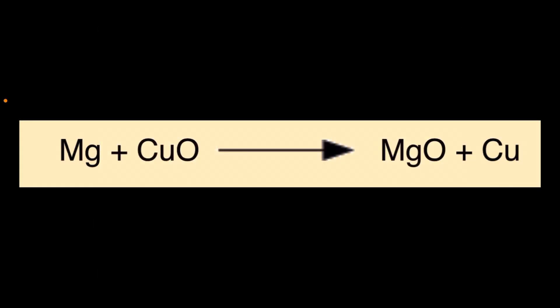So what's going on in this exothermic redox reaction is we started with reactants, magnesium, that's Mg, and copper oxide, that's the CuO. We created a homogenous mixture of those two and added heat, and that created the products, magnesium oxide, MgO, and Cu, elemental copper.